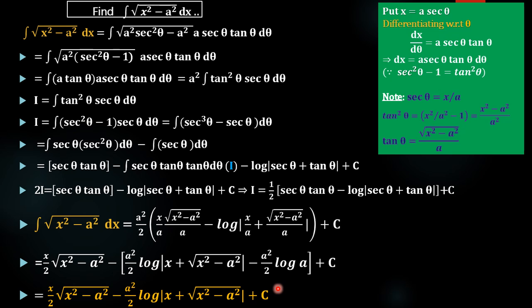To summarize, what we have done is: first changed x in terms of θ using the substitution x = a·sec θ, solved the integral in terms of θ, and then converted θ back in terms of x to obtain the final result.